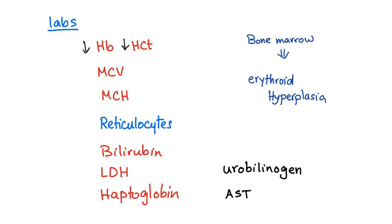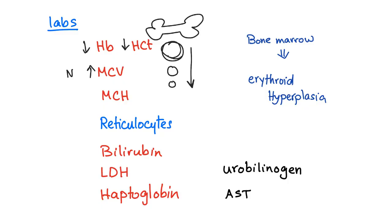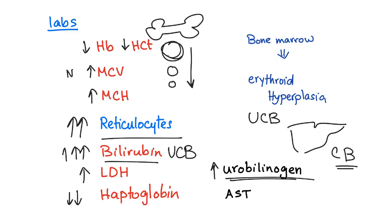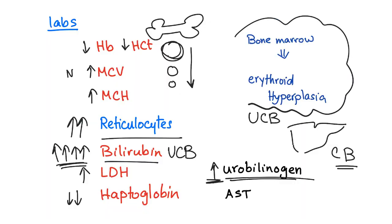Labs: hemoglobin — normal or low. Hematocrit — normal or low. It is anemia. MCV can be normal or high. Why? Because when the bone marrow is in a hurry, it secretes larger, more immature cells. MCH can also be increased for the same reason. Reticulocytes increased — both reticulocyte count and reticulocyte index. Bilirubin increased — usually unconjugated. LDH high, haptoglobin low. Urobilinogen increased because the liver works hard to conjugate bilirubin, though the rise in unconjugated bilirubin is much higher. Bone marrow biopsy yields erythroid hyperplasia, but it is not necessary to diagnose hemolytic anemia.